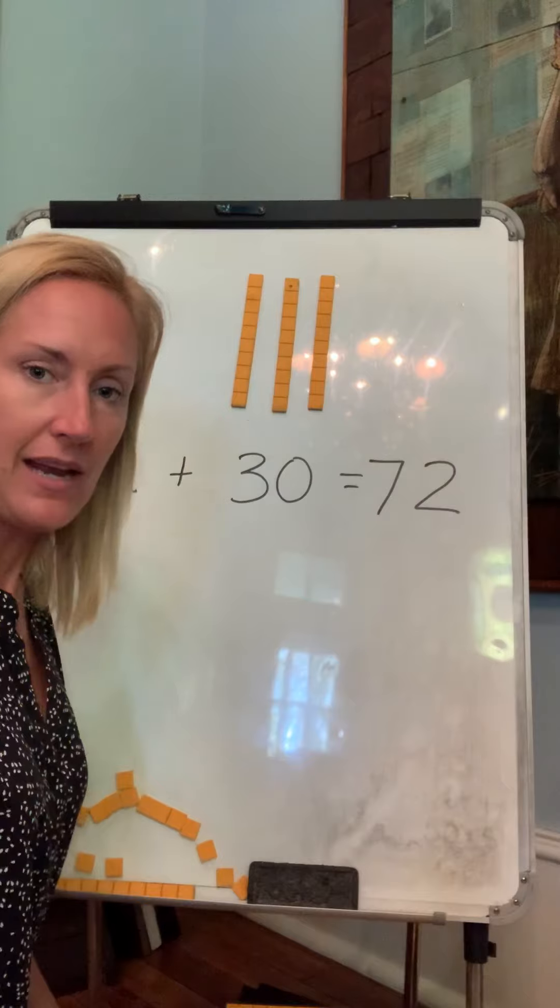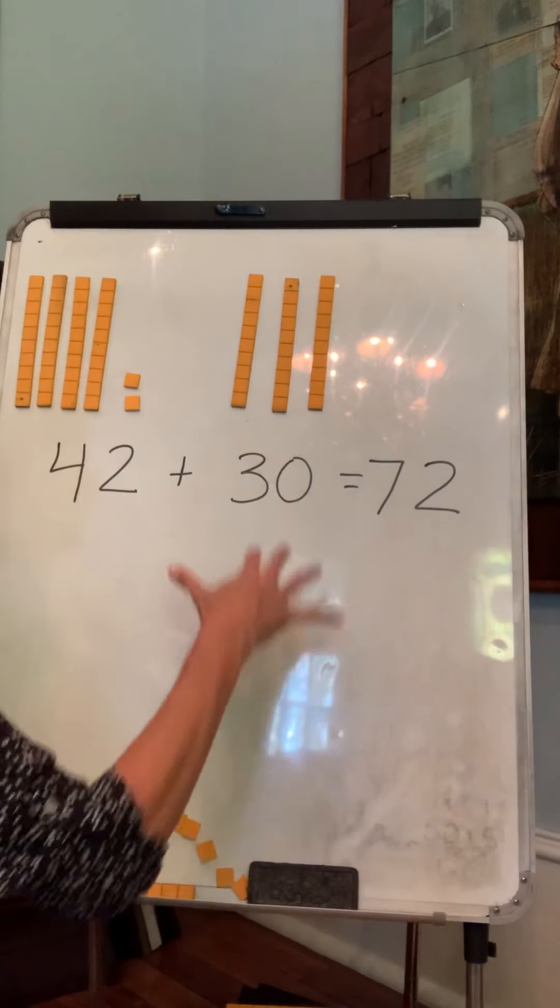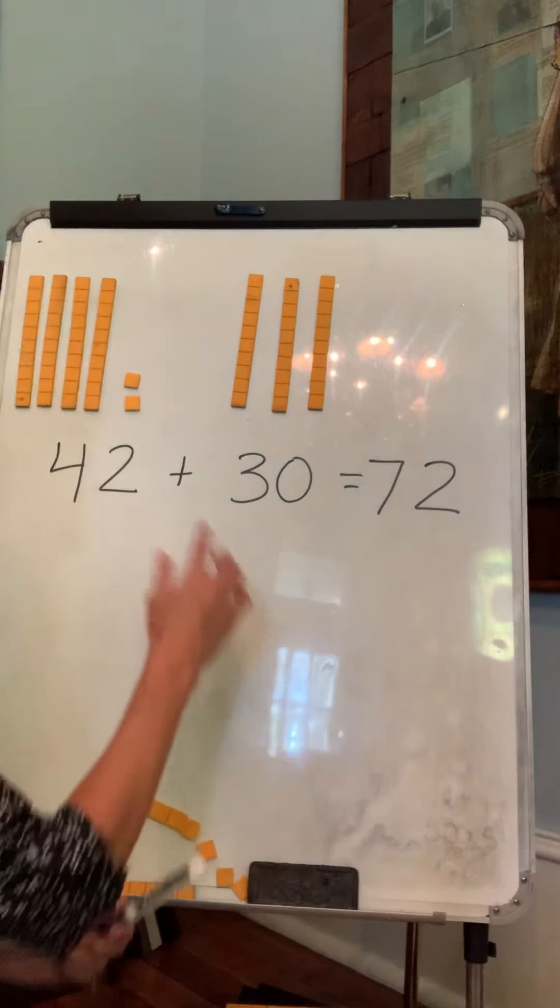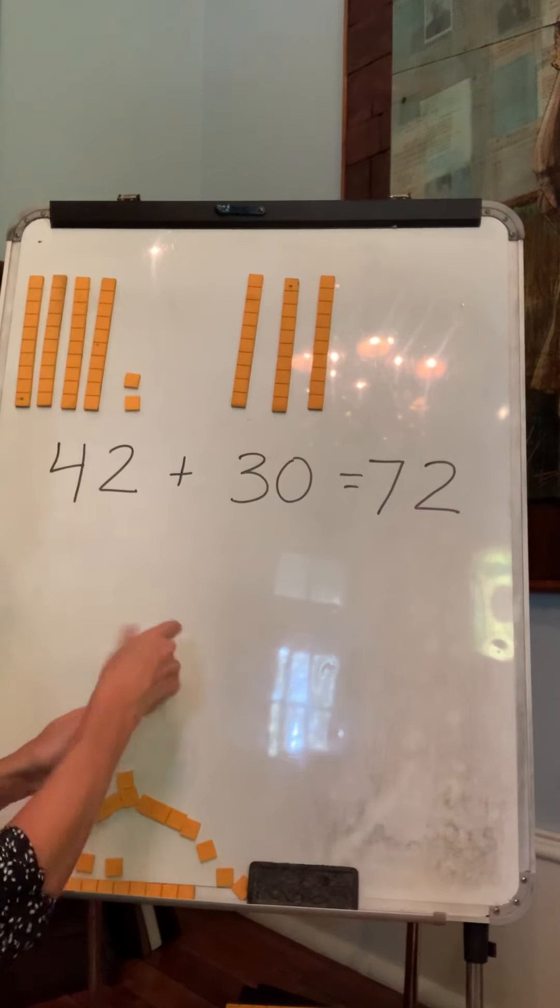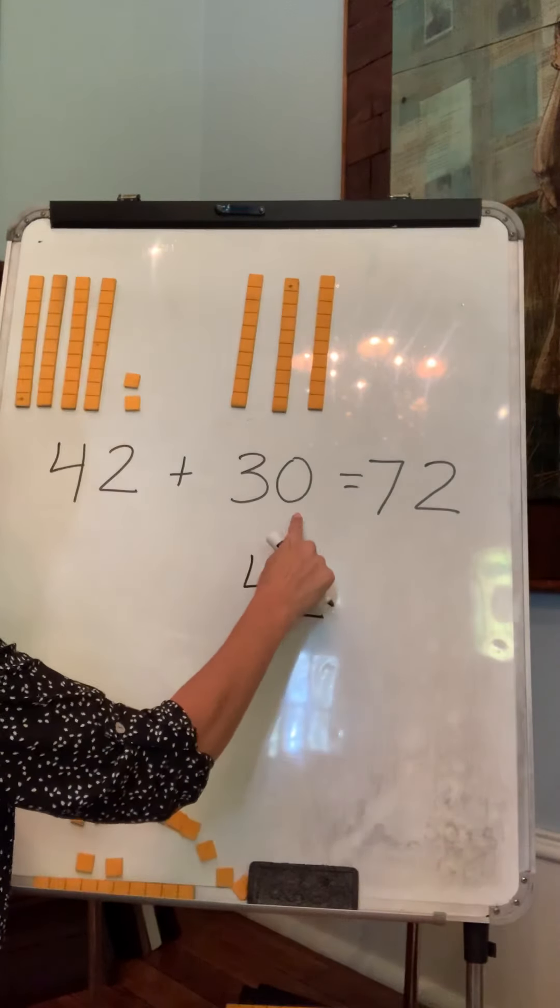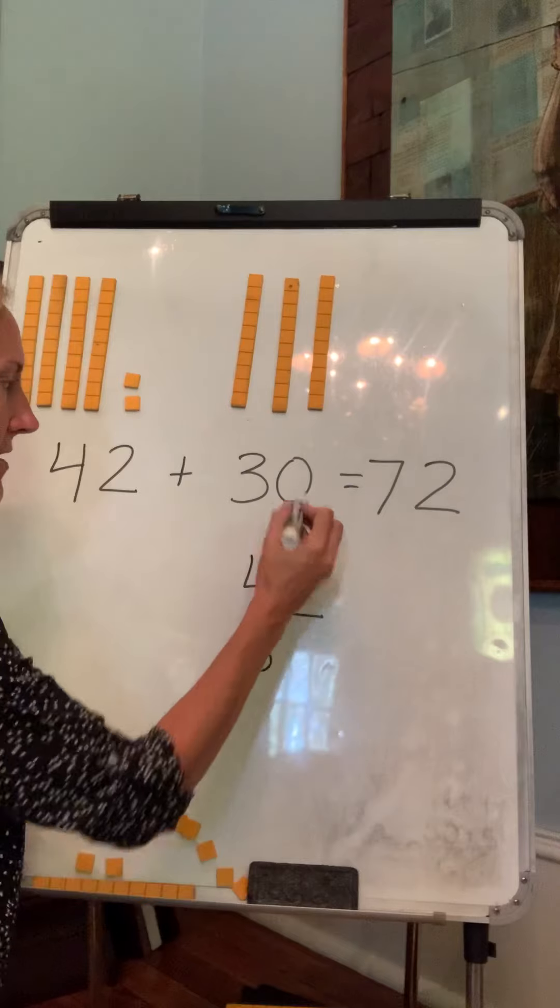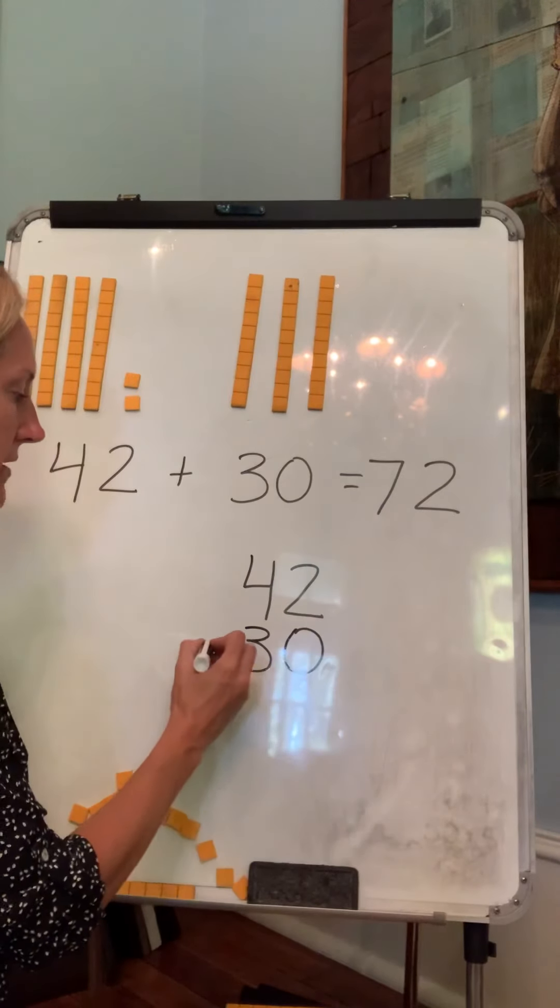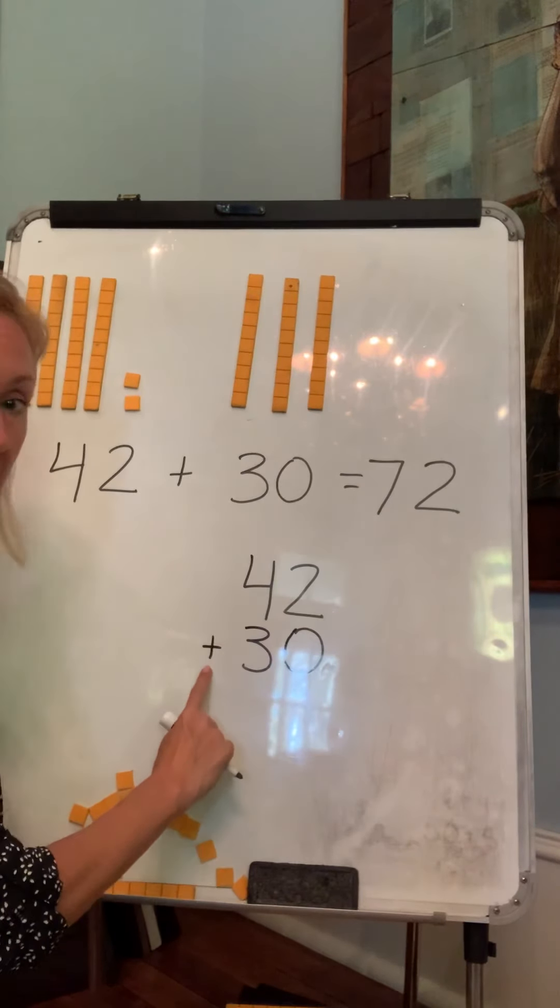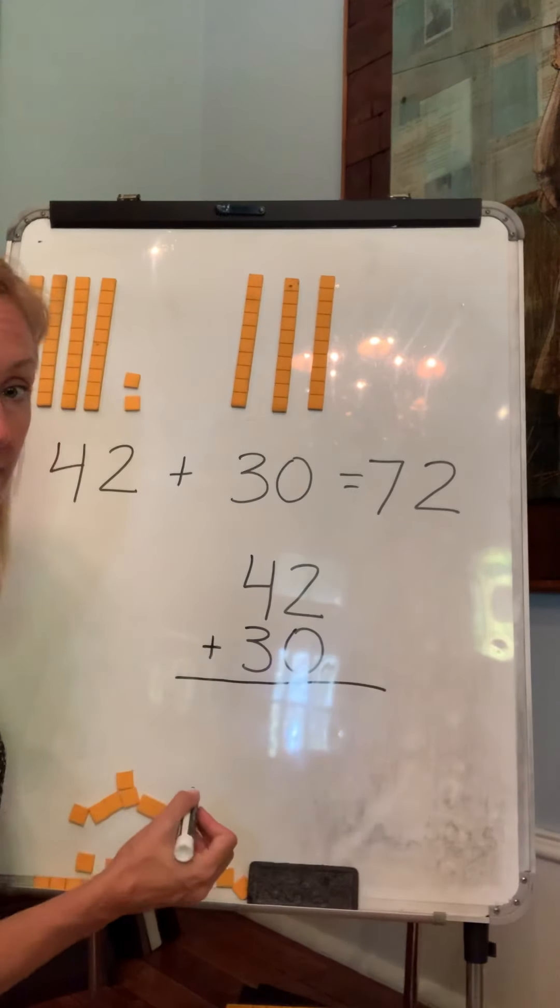Now what we were practicing last week and this week is another way to write this would be to put them on top of each other. So let's see if we get the same answer. 42. And I'm going to put 30 right underneath it. Three tens. Keep your tens together. And my zero ones. My plus sign goes on the left-hand side. And then this is my equal sign. Okay.